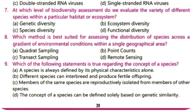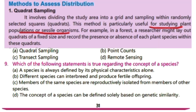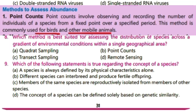MCQ number 8: which method is best suited for assessing the distribution of species across a gradient of environmental conditions within a single geographical area? Quadrat sampling is useful for studying plant populations and sessile organisms — it involves dividing the study area into a grid and sampling within randomly selected squares. Point counts is used for birds and other mobile animals.